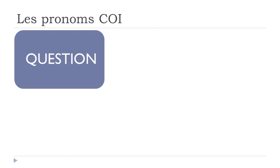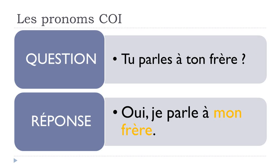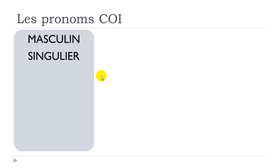So let's see the question: tu parles à ton frère. The answer you could give would be: oui, je parle à mon frère. But in most cases in French, we won't repeat the à mon frère part — we'd rather use pronouns, just to avoid repeating this complément d'objet indirect. As usual in French, we will have the difference between the masculine form, the feminine form, and the plural form.